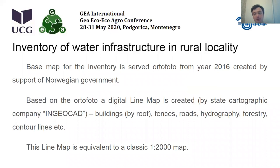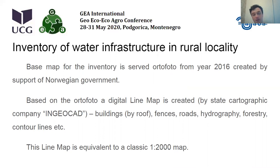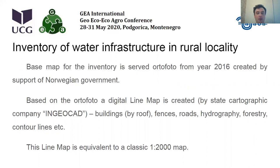The base map for the inventory was Autofoto from year 2016, created with the support of the Norwegian government. Based on Autofoto, a digital line map was created by the state cartographic company Geocad. It consists of buildings by roof contour, fences, roads, hydrography, forestry, contour lines, and other layers. This line map is equivalent to a classic 1 to 2000 map.